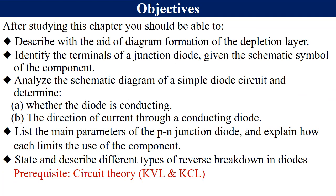Because this is a basic electronic device, we've got quite a number of objectives. The first one is: you must be able to describe, with the aid of a diagram, the formation of the depletion layer. Number two, identify the terminals of a junction diode — that is the anode and the cathode — from a schematic symbol. Then analyze the schematic diagram of a simple diode circuit.